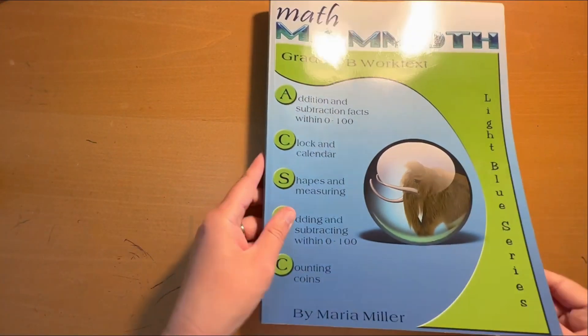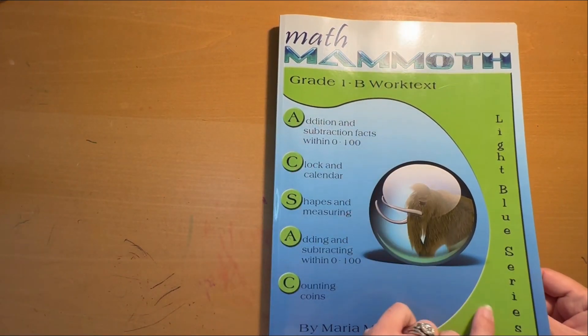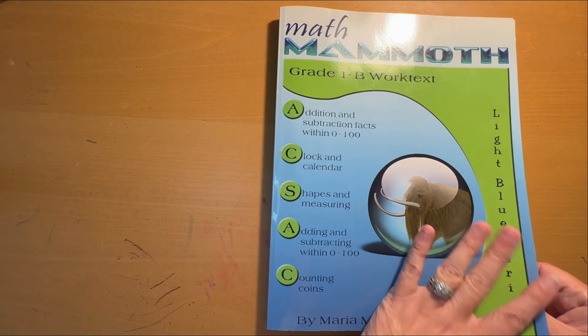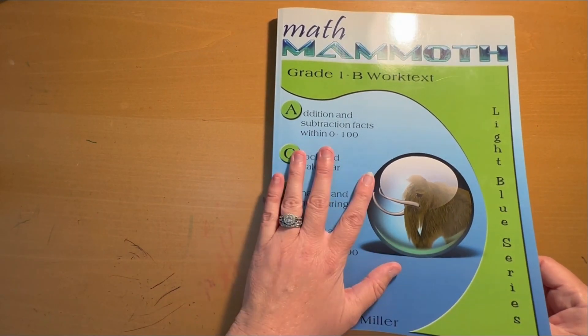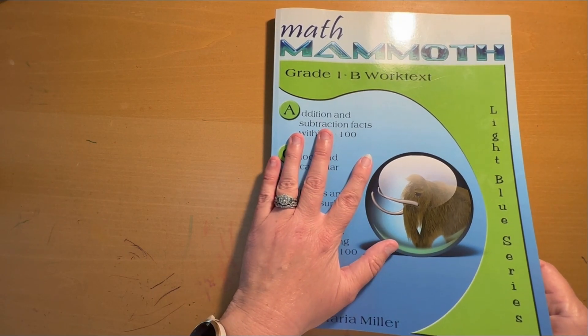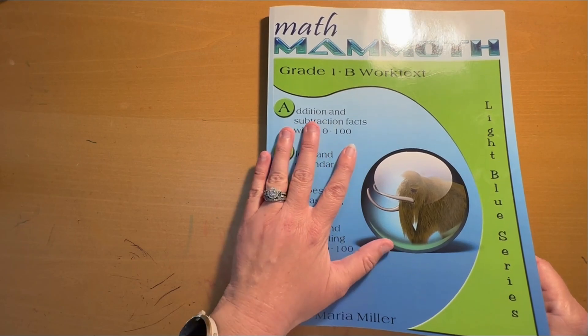And then we pick up with book 1B. This is the Light Blue series, which is the U.S. version of the curriculum. She also does have some books that are topic-based if your kid just really needs extra practice on a certain topic.